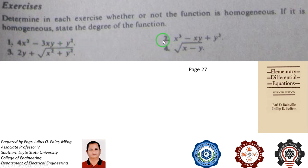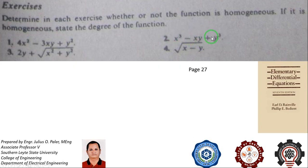For number two, the degree of x cubed is 3, the degree of xy is 2, and the degree of y cubed is 3. They are not homogeneous because not all the terms are of the same degree — x cubed and y cubed are third degree, but xy is second degree. Therefore, this polynomial function is not homogeneous.